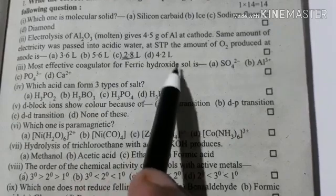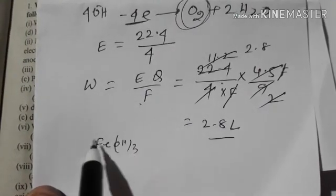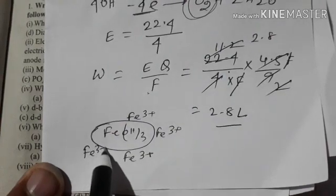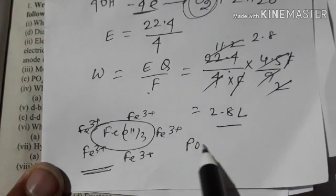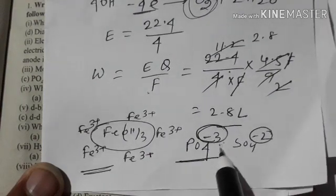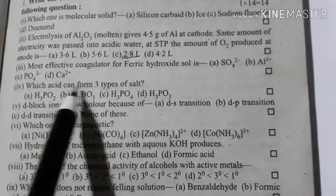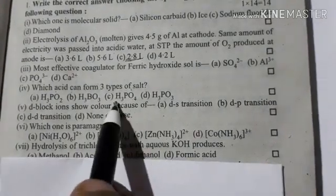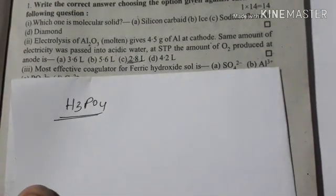Most effective coagulator for ferric hydroxide sol is: Fe(OH)3 is a positive sol because Fe3+ adsorption is greater. So the positive sol requires a negative ion — that is phosphate or sulfate. H3PO4 can form 3 types of salts.